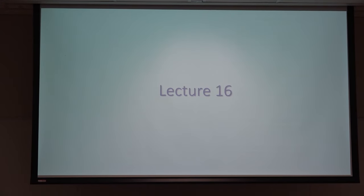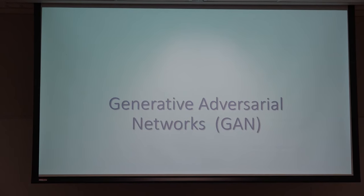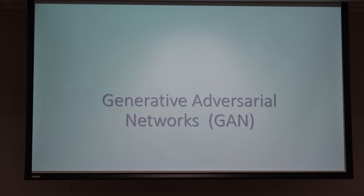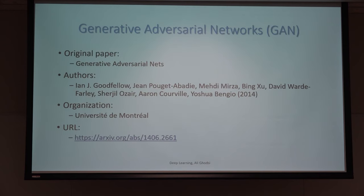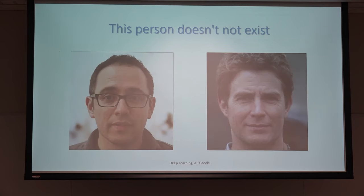In the last lecture we learned about variational autoencoders as a type of generative model. Today's lecture is mainly about GAN — generative adversarial networks — another type of generative model. This is the main paper. These people do not exist; these are realistic images generated by GAN, and you may have seen demos of GAN in many different applications.